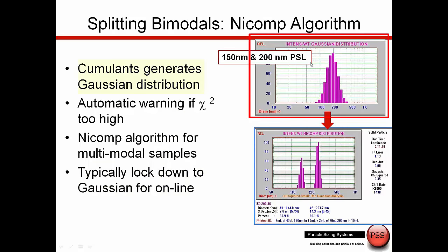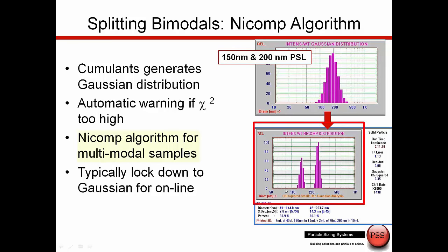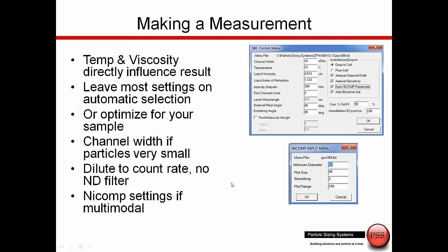When we use a Gaussian distribution, as you see here, there's a single peak and the distribution is symmetric. This particular sample, though, was a mixture of two polystyrene latex samples — 150 and 200 nanometer PSL particles — where we would need to use the NICOM distribution to split those two peaks. That's one of the highlights of the NICOM system, this NICOM algorithm. We need to choose beforehand whether there's one or two peaks, and then lock this down during the measurement, because we need easy data interpretation if we're going to use this as a process monitor.